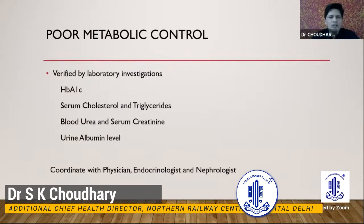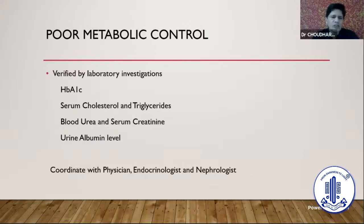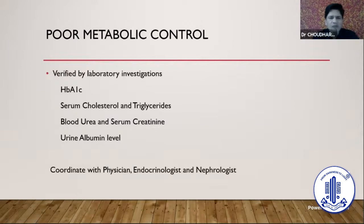Poor metabolic control can be verified with laboratory investigations. For blood sugar, the most important and reliable marker is HbA1c, because fasting and postprandial blood glucose may be misleading — HbA1c gives real control for the last three months. If serum cholesterol and triglycerides are raised, they keep pushing DME and are very difficult to treat if not controlled. Patients with higher blood urea and serum creatinine levels are also very difficult to treat. Urine albuminuria is very important and most often under-diagnosed and ignored.